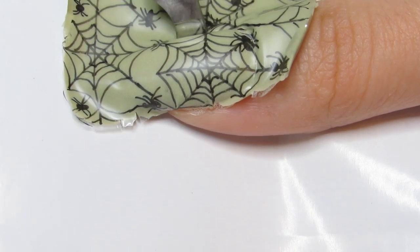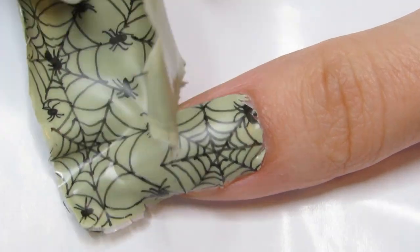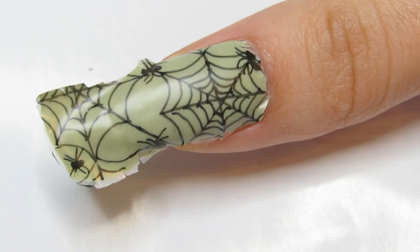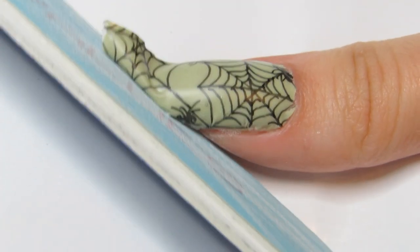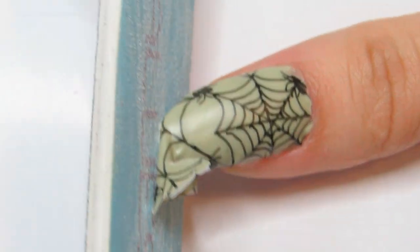Peel away the excess sticker and save it for your other nails. Then with a nail file, file off the excess sticker at the free edge, and just apply a top coat. And now you're set for Halloween.